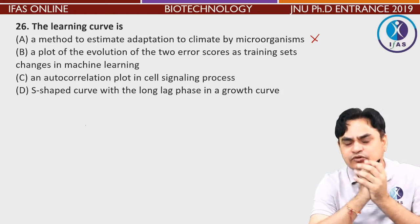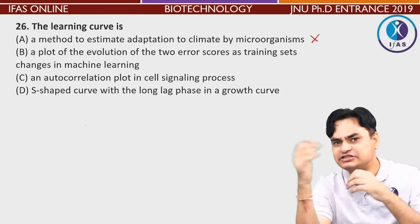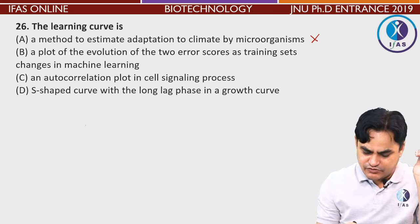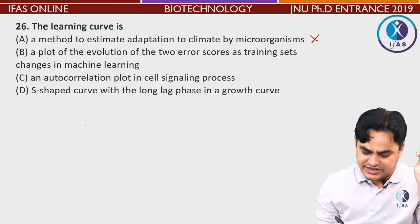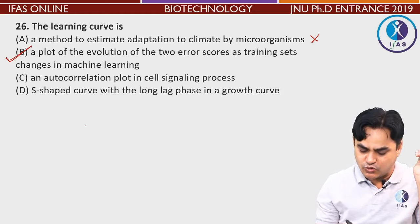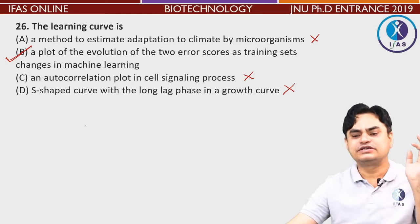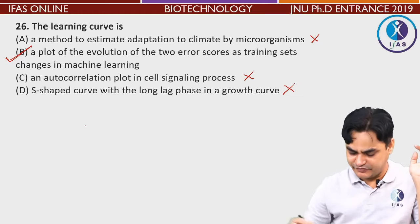In short, this learning curve is related to bioinformatics and machine learning — it is a tool to assess error, which can be due to variance or bias. So the correct answer is: 'a plot of evolution of two error scores as training set changes in machine learning.' An auto-correlation plot in cell signaling process is completely wrong. This question can also be solved because only one option is bioinformatics-related; the rest are not.